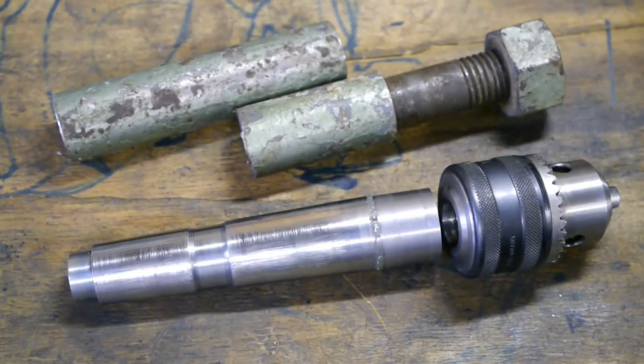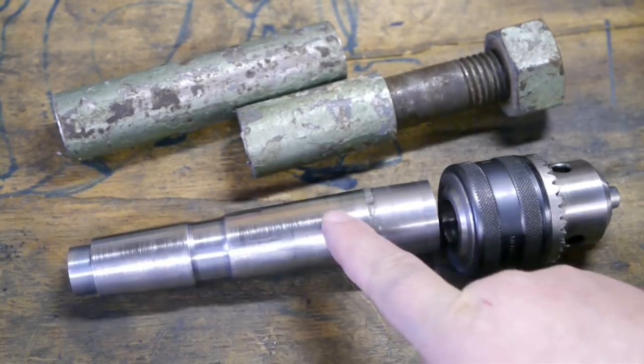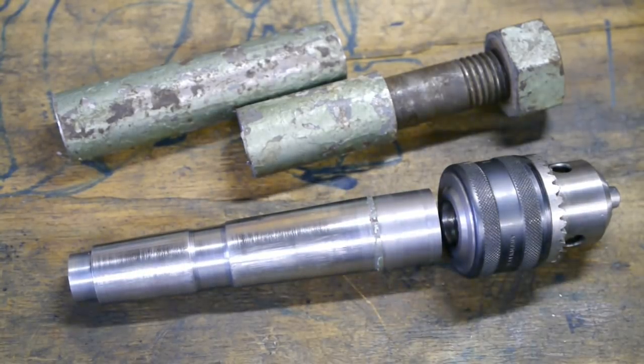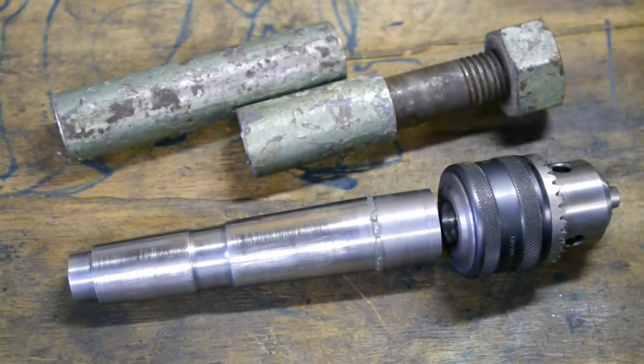Plan B by the way is punching a reference mark on the side of the arbor and making sure it's always used in the same spindle position.